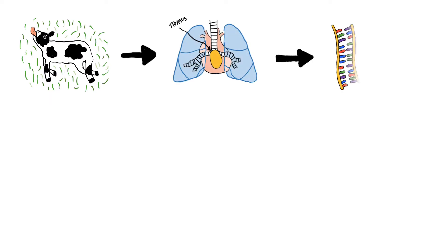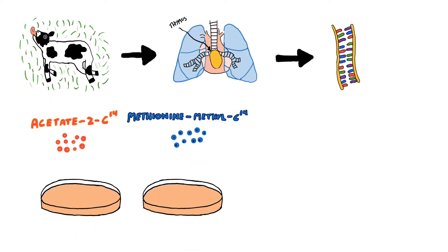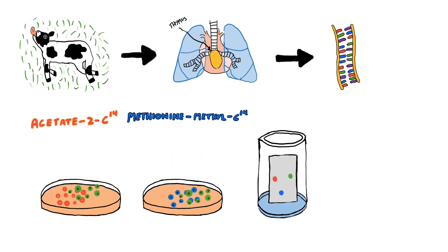To test this, he incubated nuclei from calf thymus in vitro with acetate-2-carbon-14 and methionine-methyl-carbon-14. These compounds were incorporated with carbon-14 lysine and analyzed using chromatography. Alfre's results proved that histone modification altered gene regulation, opening the door to acetylation and methylation research.